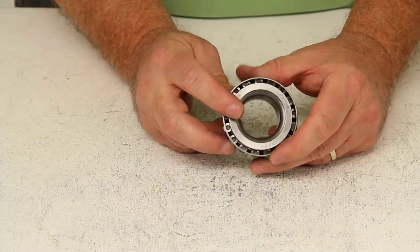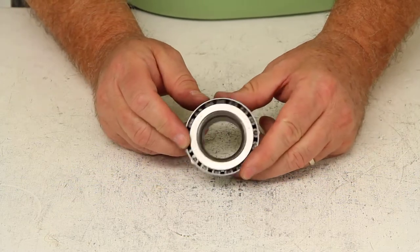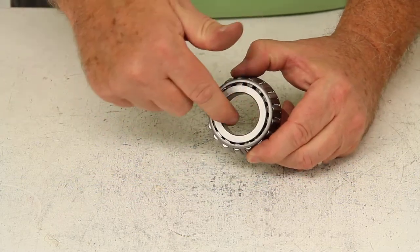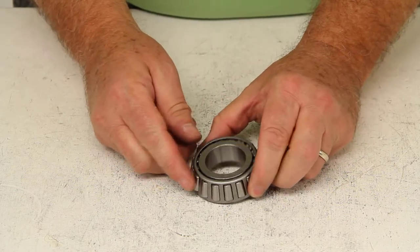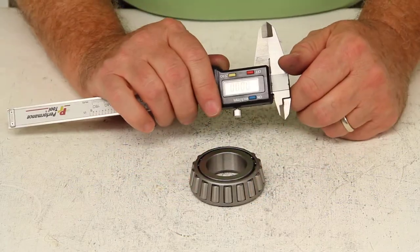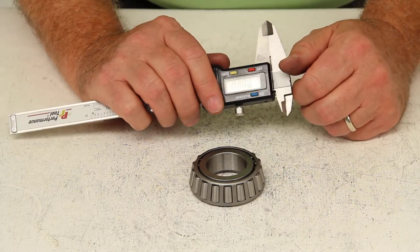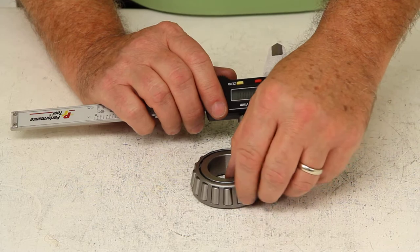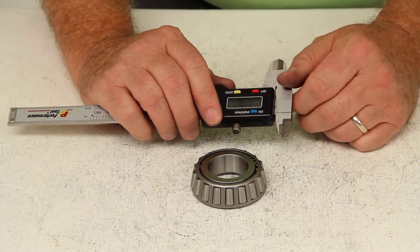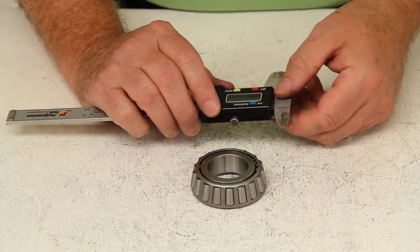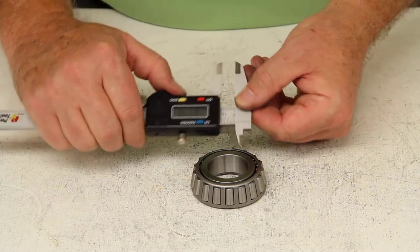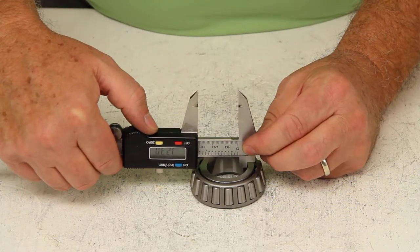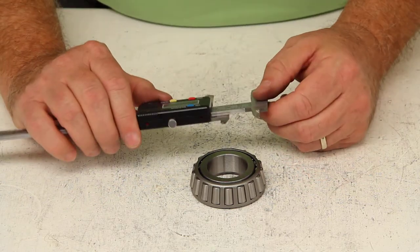Now if you do not have the part number off the bearing, the other way to get it would be to measure the inside diameter of the bearing on the inner ring right here. But to do that correctly, you do need to use a digital caliper to be able to measure it into thousandths of an inch, because the measurement is listed in thousandths of an inch, so a ruler or a tape measure would not work. So what you'd want to do is just measure this inner diameter of the bearing. For this one would be 1.250.